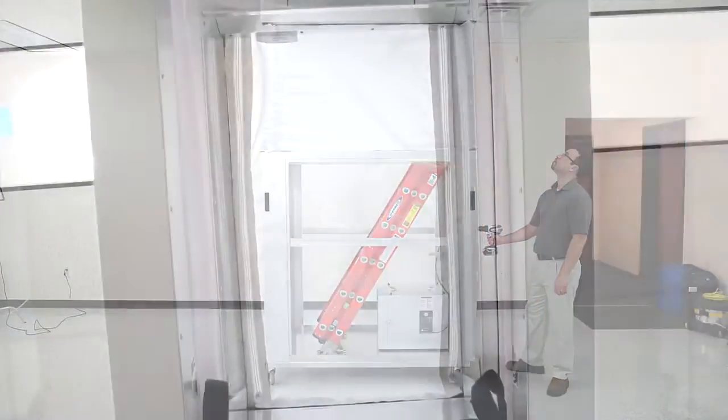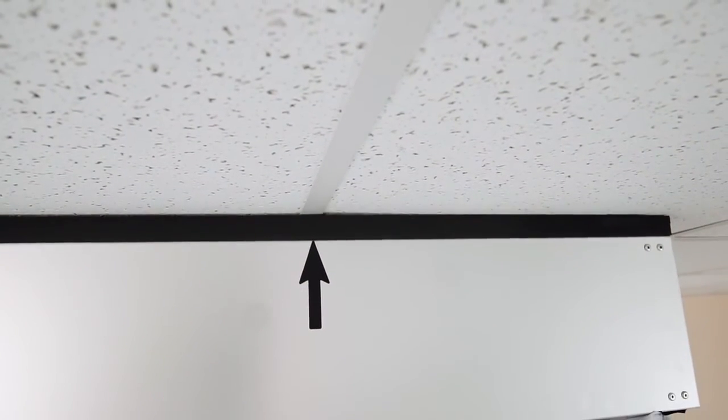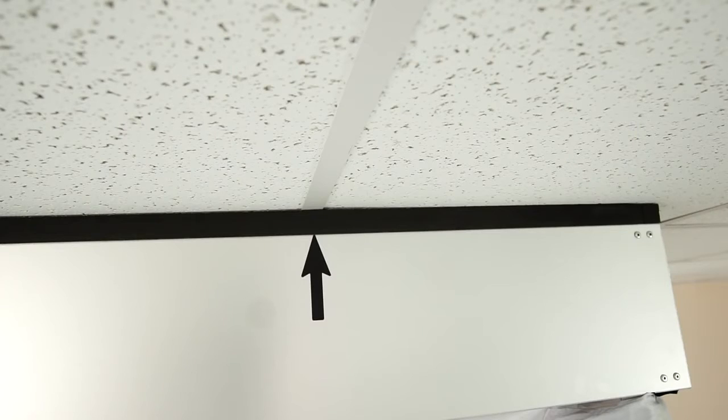To raise the header to the ceiling, use either the hand crank or a drill on the mechanism in the back of the unit. When raising the unit to the ceiling, you'll need to make sure that the arrow on the header lines up with the ceiling grid. Raise the unit until the header touches the ceiling, being sure not to overextend the header and damage the unit or the ceiling.